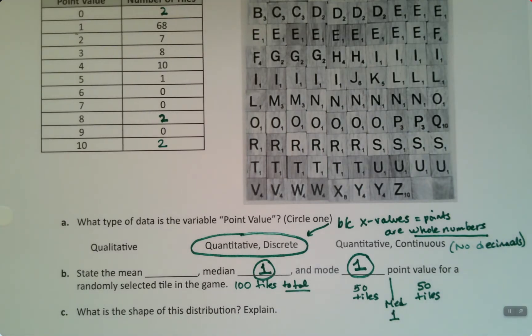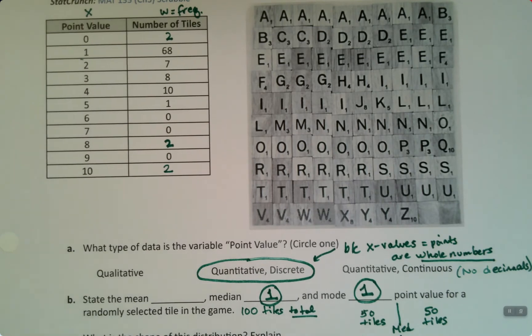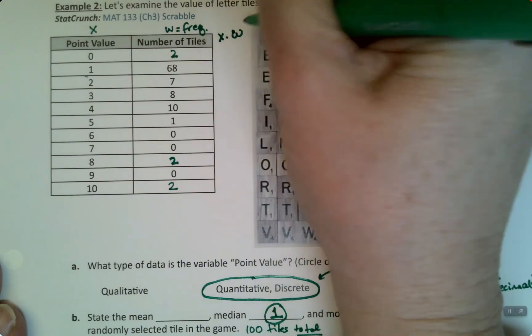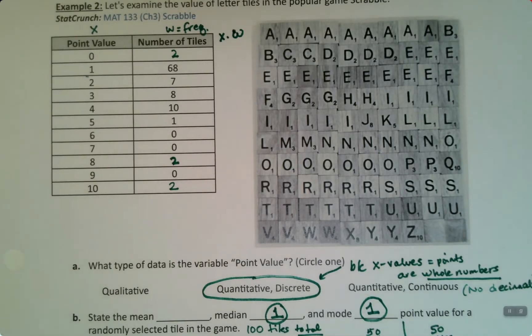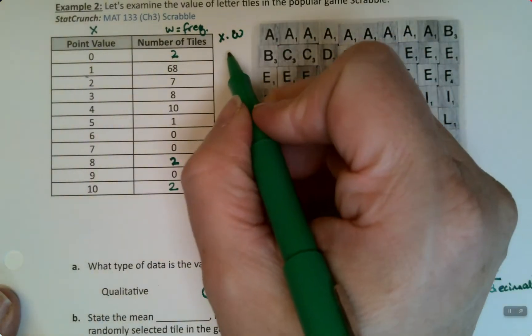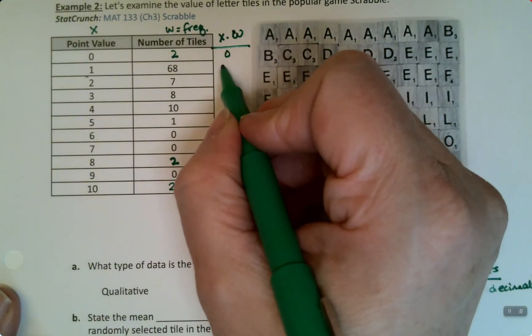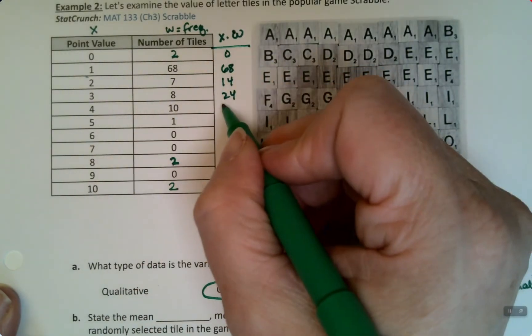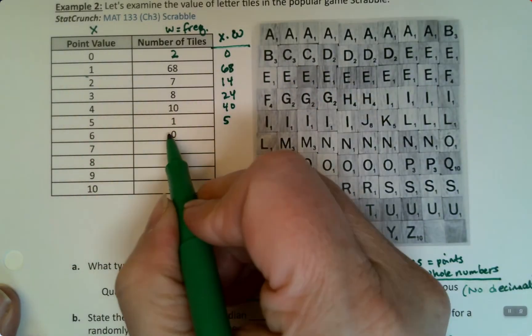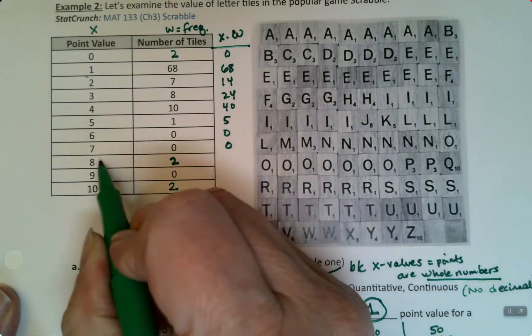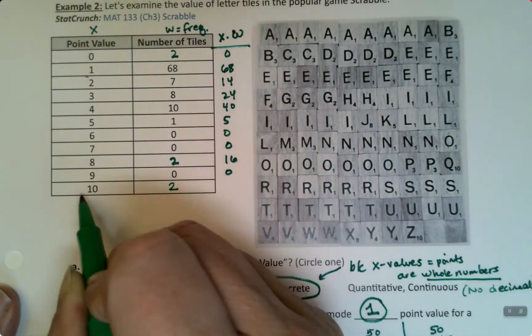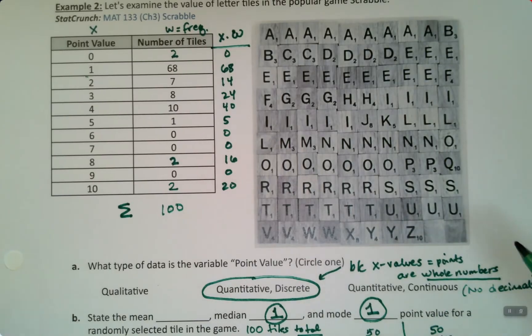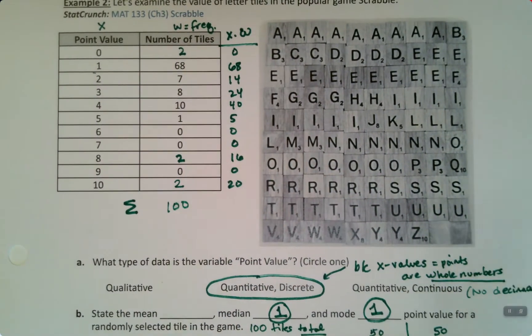So then what about the mean? Let's do the mean by hand for extra practice. What we're going to do is make a new row out here that's x times the weights or the frequencies. I'll just write w because we're used to writing w. So 0 times 2 is 0, 1 times 68 is 68, 2 times 7 is 14, 3 times 8 is 24, 4 times 10 is 40, 5 times 1 is 5, and so on.